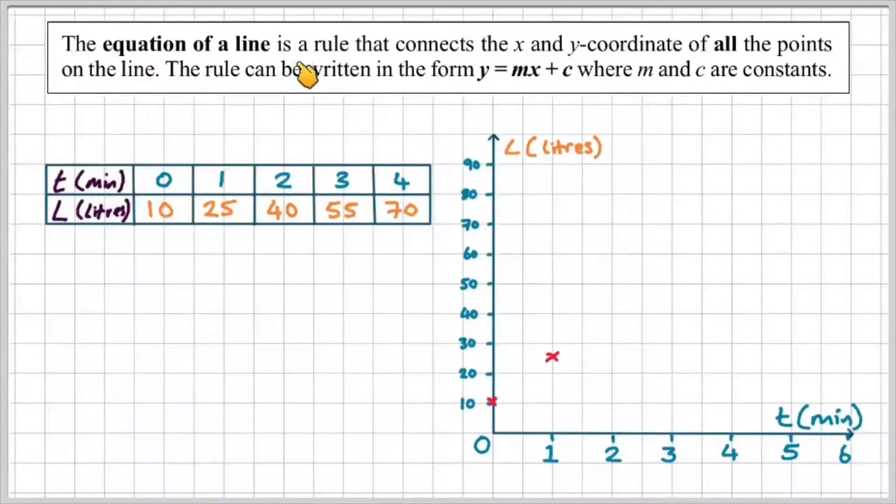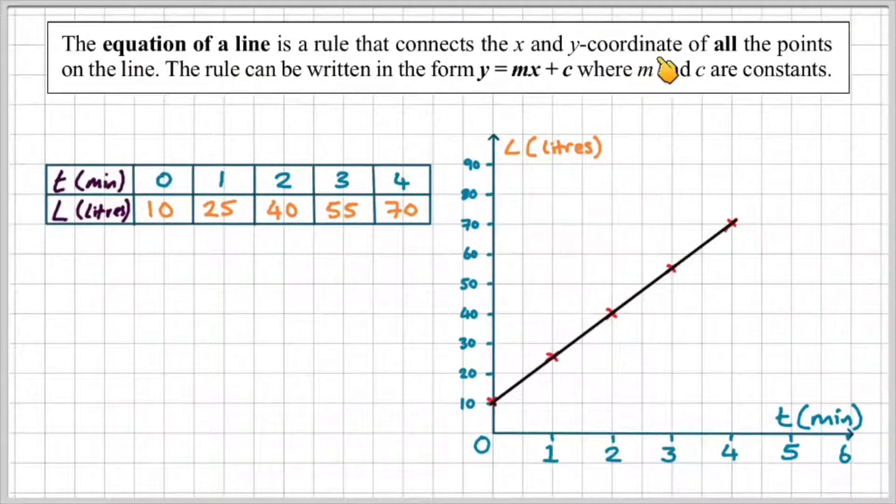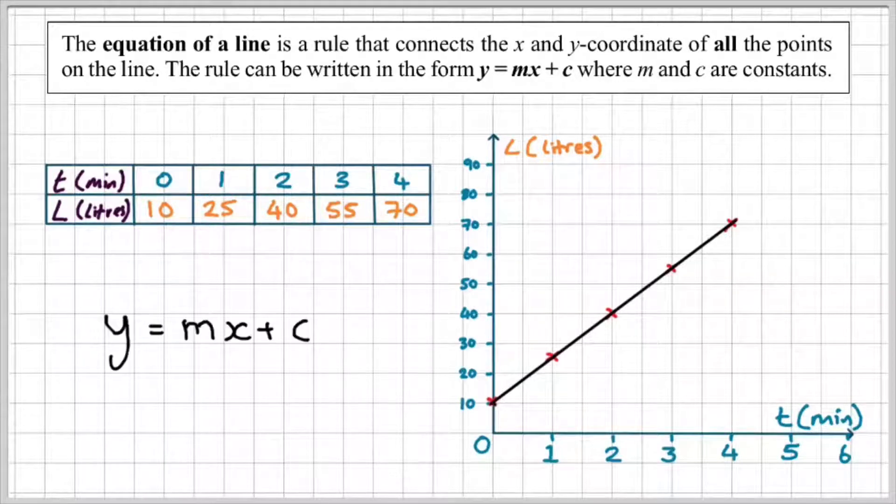So the equation of a line is the rule that connects the x and y coordinates for all the points on the line. The rule can be written in the form y equals mx plus c, where m and c are constants. I've taken an example from a previous video with a table of values and a graph with a straight line on it, so we're going to use this to explain the components of y equals mx plus c.